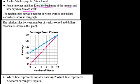So the first thing they're asking us is which line represents Jonah's earnings. Well, to figure that out, I might focus on the theme that is different about them. Jonah's being paid $20 at the beginning and Anchi is not.